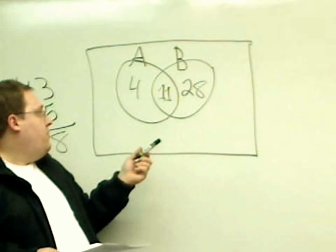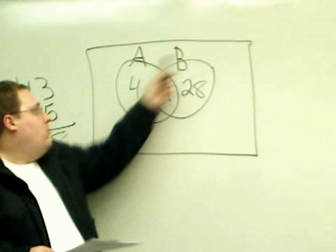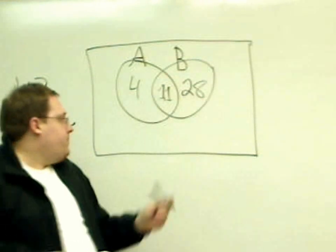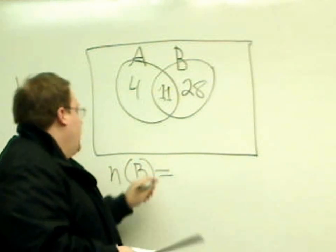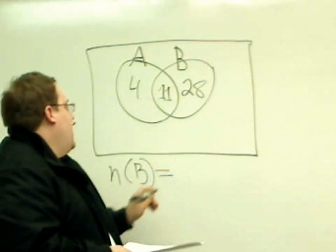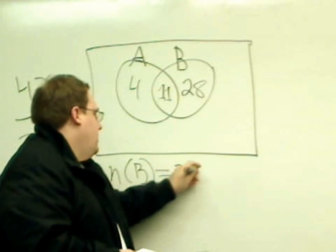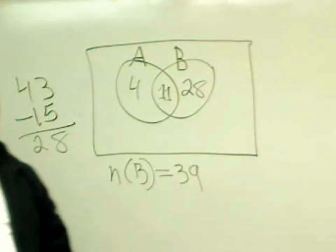However, the total amount of things that's in set B would be 28 plus 11. So n of B is going to equal 28 plus 11 is 39. There's your answer.